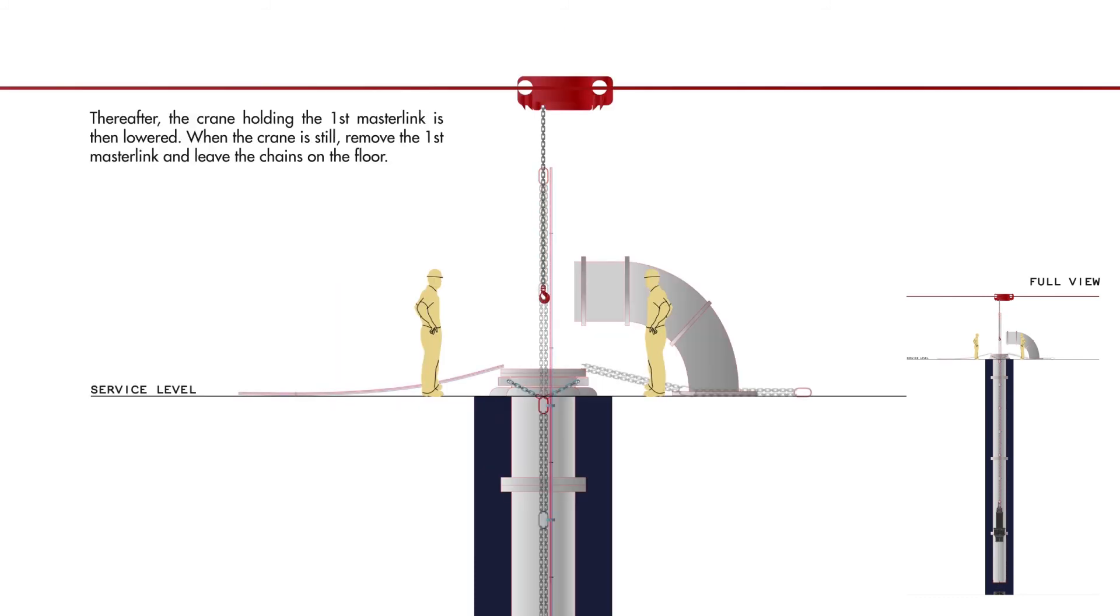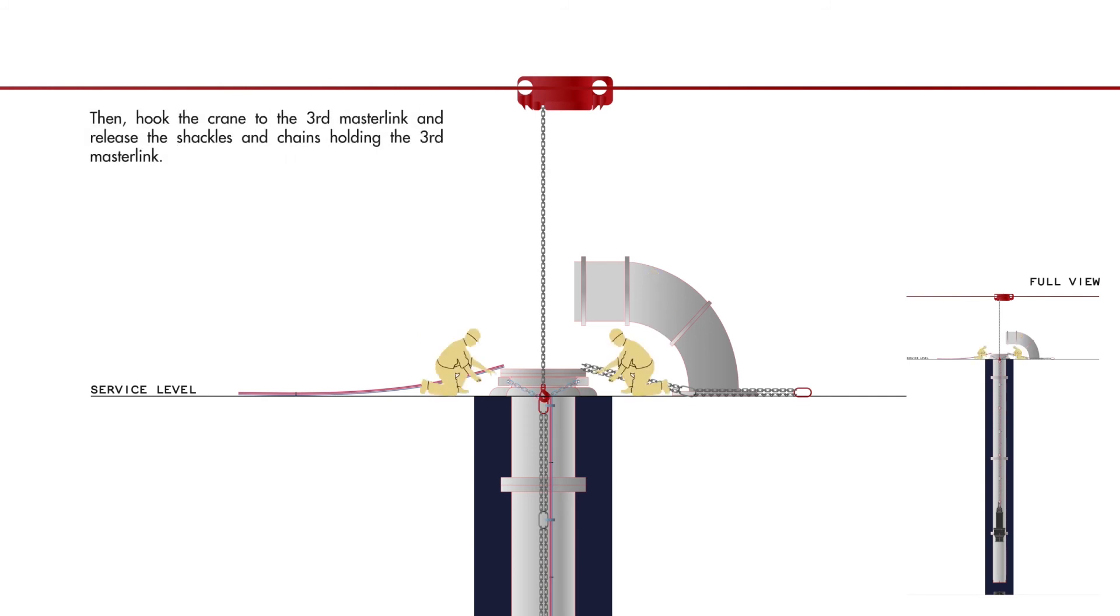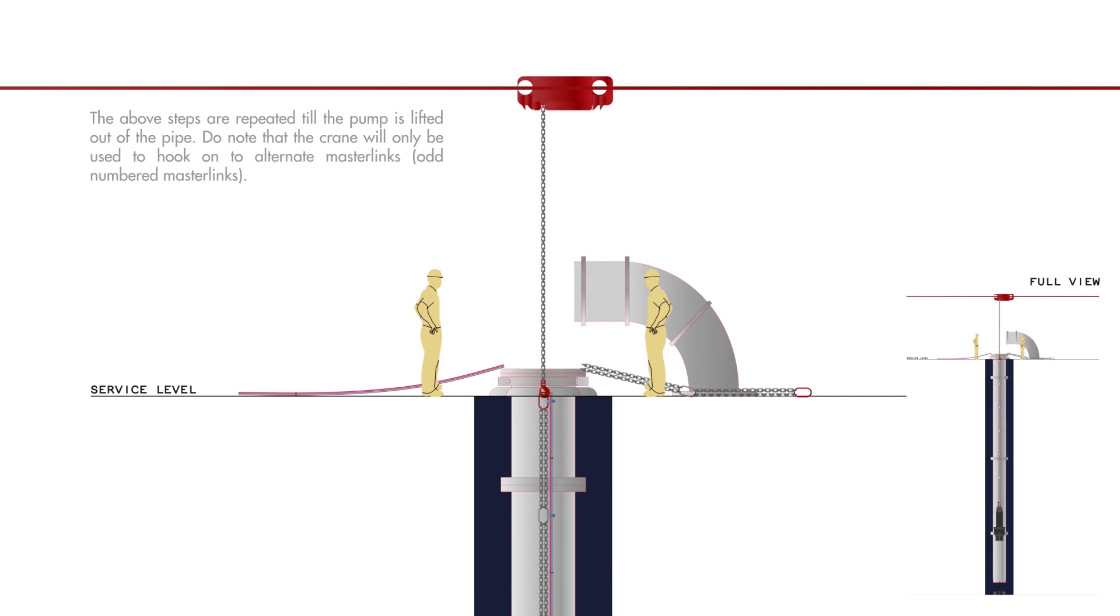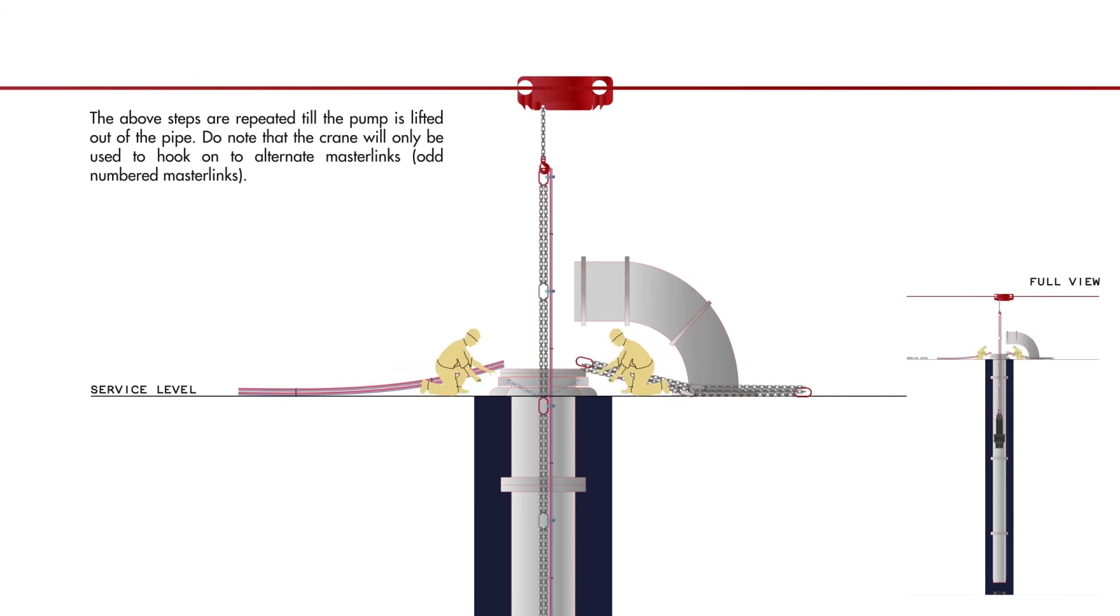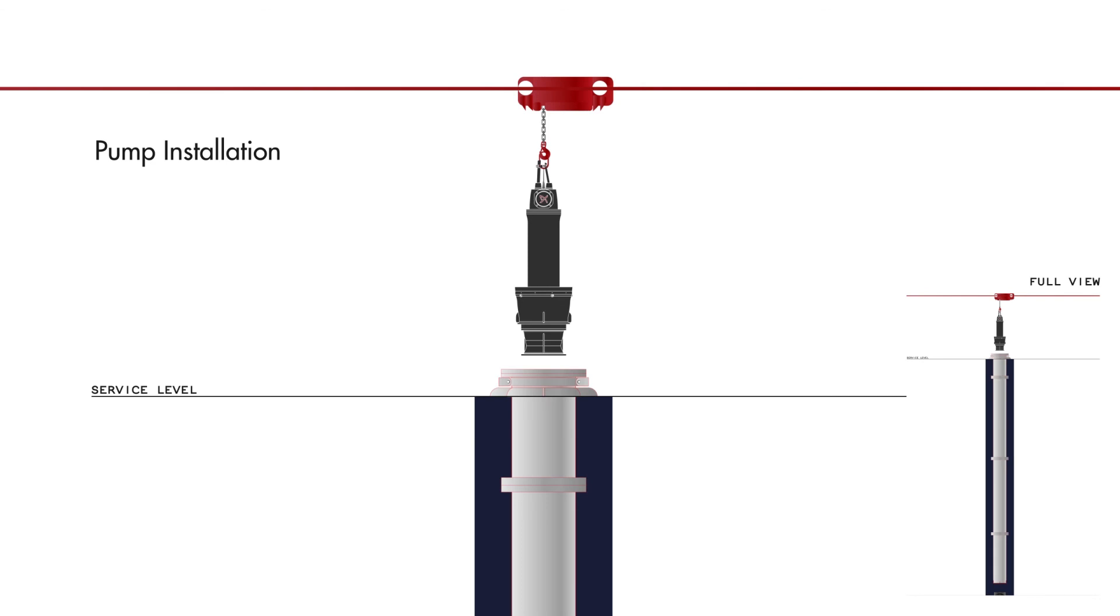To lift up the pump from the column tube, hook onto the first master link and remove the turnbuckles. Start to lift the pump up as high as possible and install the support chains in the closest possible master link. Hook onto that master link with the hook and repeat the process until the pump is free of the column tube.